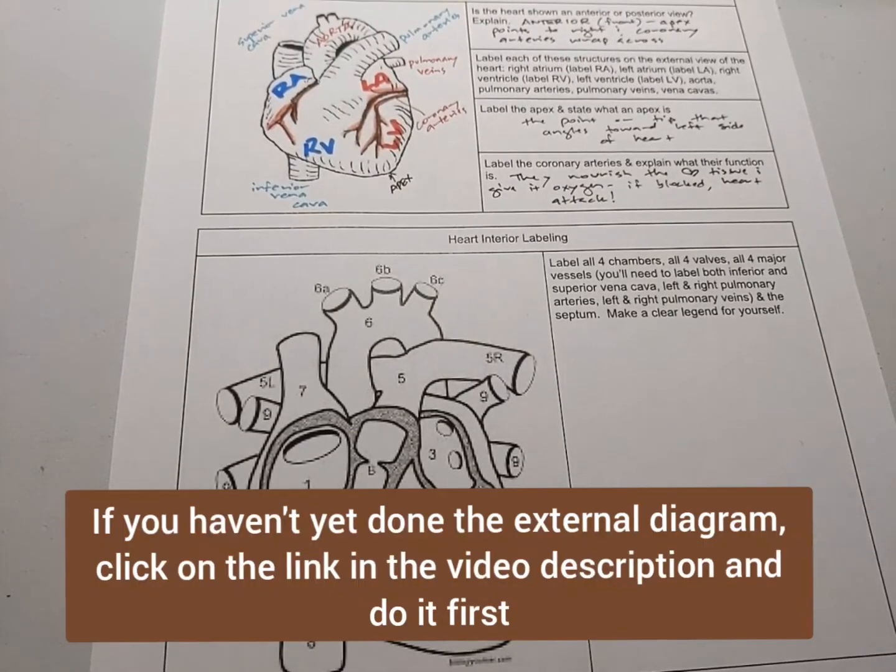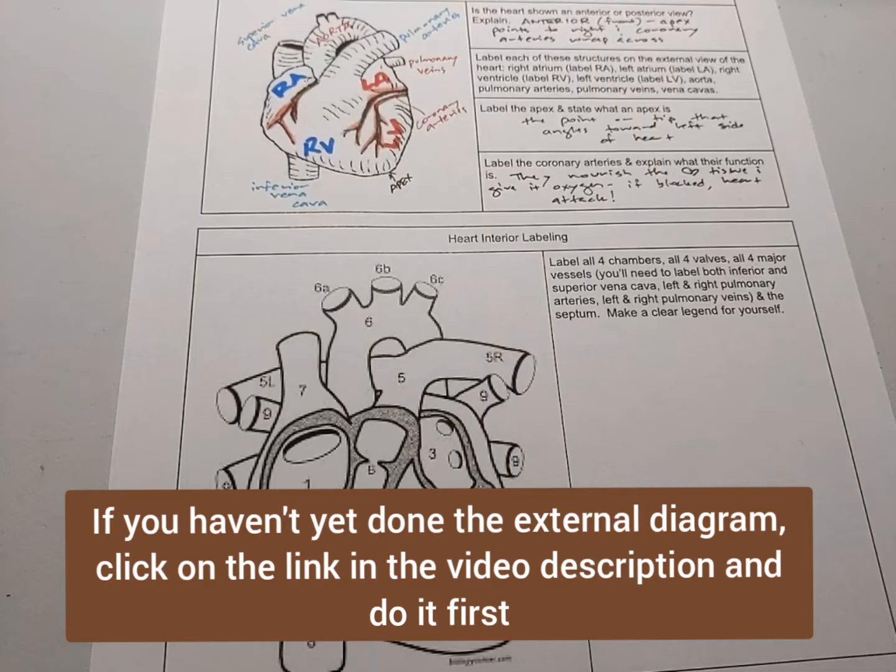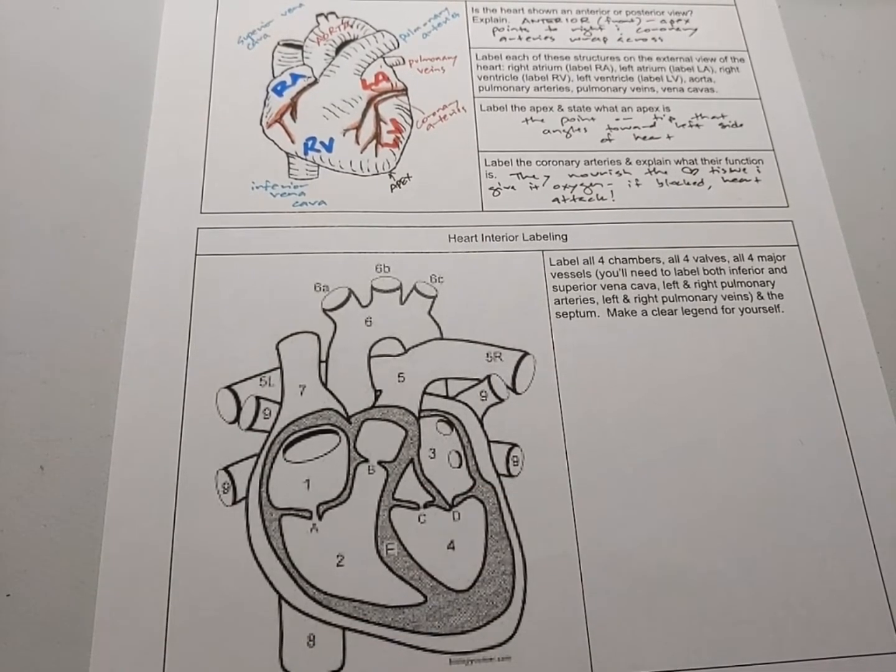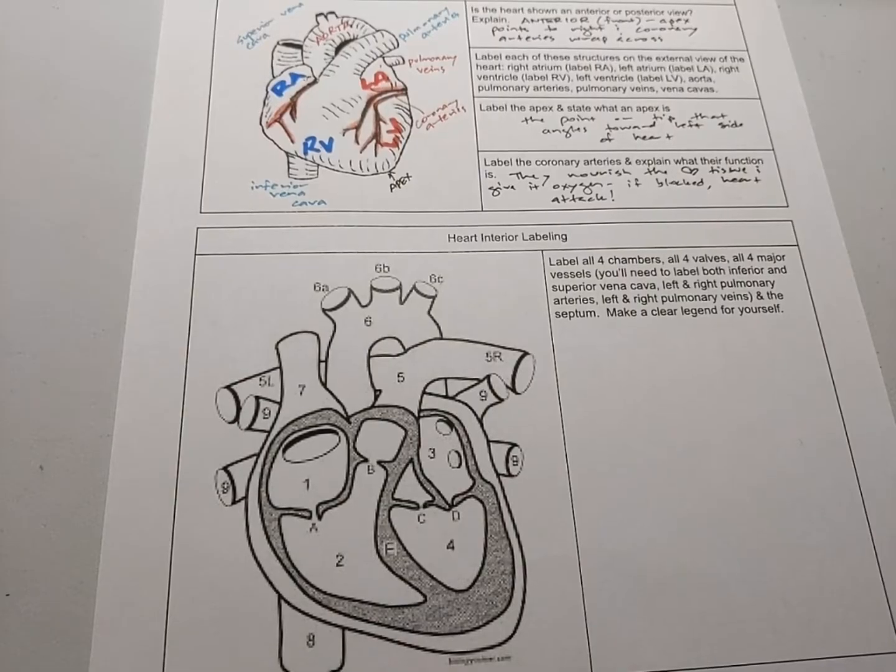We did the external anatomy of the heart and now we're going to do the internal anatomy. If you look at the picture at the top, we've already labeled the atria and the ventricles.